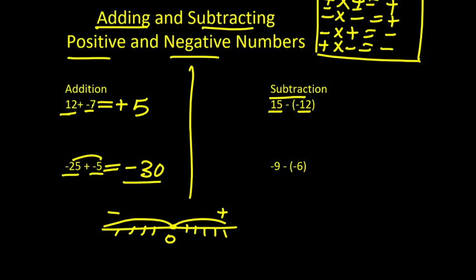One sign here is the operation sign, which is minus, and the other sign is the sign of the number, which is negative. So negative times negative equals positive, and the number becomes positive 12. The other number is positive 15, so the sign we get is positive. 15 plus 12 equals 27, since 2 plus 5 is 7 and 1 plus 1 is 2.